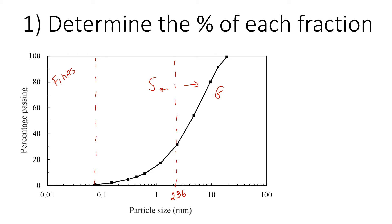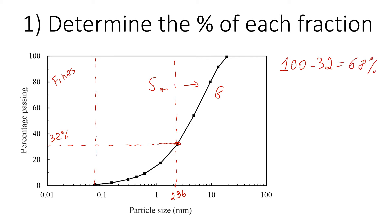To find out how much gravel is in this soil, we look at the percentage passing and draw a line. We can see it's about 32%. This means 32% of the soil is finer than the 2.36 millimeter sieve, so the remaining 100 minus 32 — that's 68% — is retained on the 2.36 millimeter sieve. This means gravel is 68%.